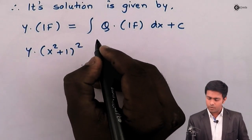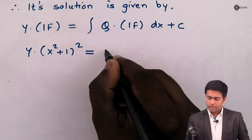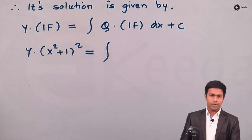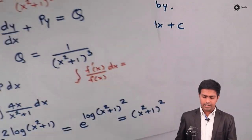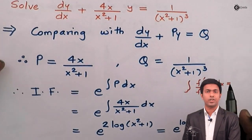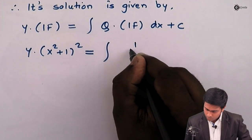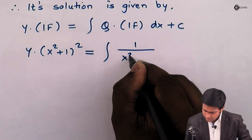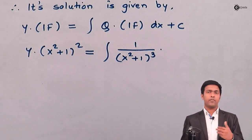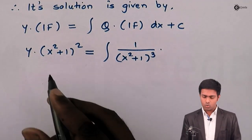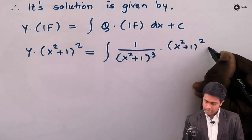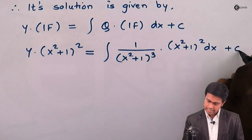...equals the integration of Q. The value of Q is 1 upon (x² + 1)³. So it becomes the integration of 1/(x² + 1)³ into the integrating factor (x² + 1)² dx + C.